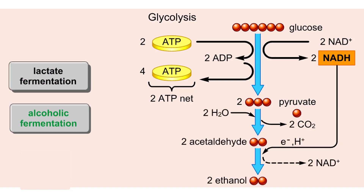In alcoholic fermentation, pyruvate is converted to the two-carbon fragment acetaldehyde with the release of carbon dioxide. Acetaldehyde accepts electrons and hydrogen from NADH. This transfer regenerates NAD and forms ethanol. The net energy yield is the two ATP from glycolysis.